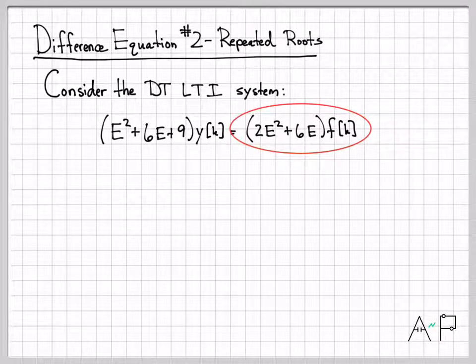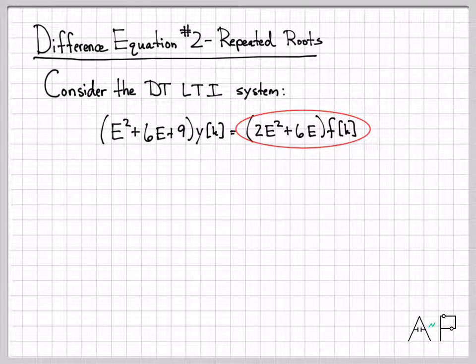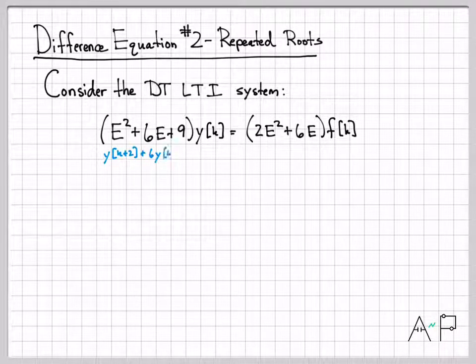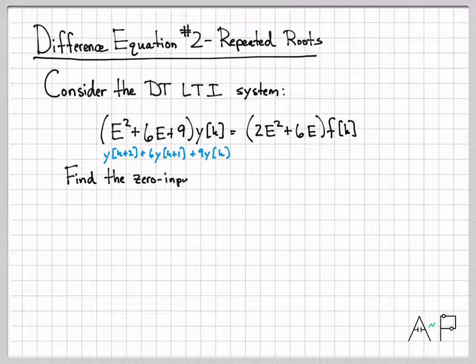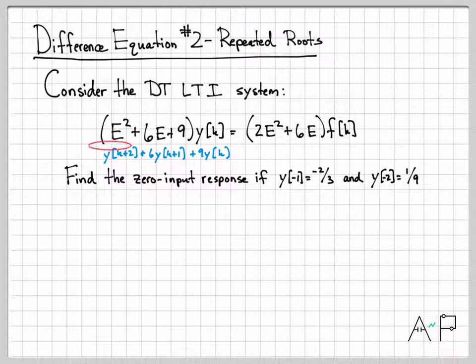If we were solving for the total response that would be something we would have to account for. But keep in mind what we're doing here - we are solving for the zero input response. So even though the right side of this equation looks complicated, we are solving it for the case of the input equaling zero. If you want to, you can go back to the difference equation version.